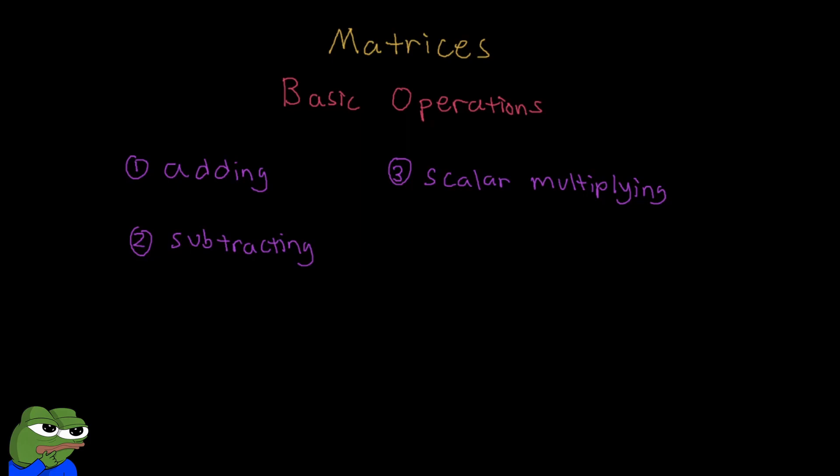Matrices are pretty special. You can do lots of operations on matrices. Later on in linear algebra, you'll learn how to do diagonalization or even taking the inverse of a matrix. But for now, let's focus on the very basic operations that you can do with matrices. In particular, adding matrices, subtracting matrices, and finally multiplying a matrix by a scalar number.